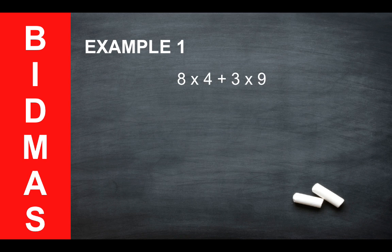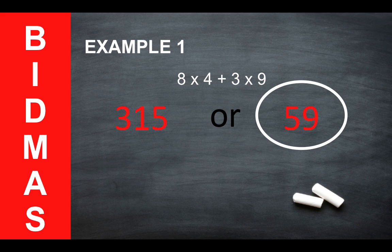Let's give you an example. Here we have 8 times 4 plus 3 times 9. Now we have two possible answers: 315 or 59. If we use BIDMAS correctly, we can see that the correct answer is 59.